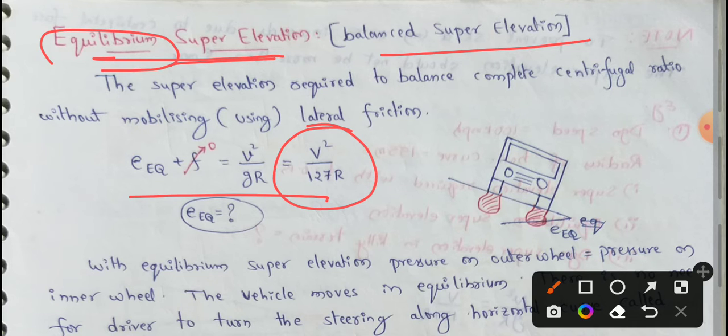For equilibrium super elevation, e equilibrium (rate of super elevation equilibrium) plus f, where f equals zero - that is without using lateral friction.